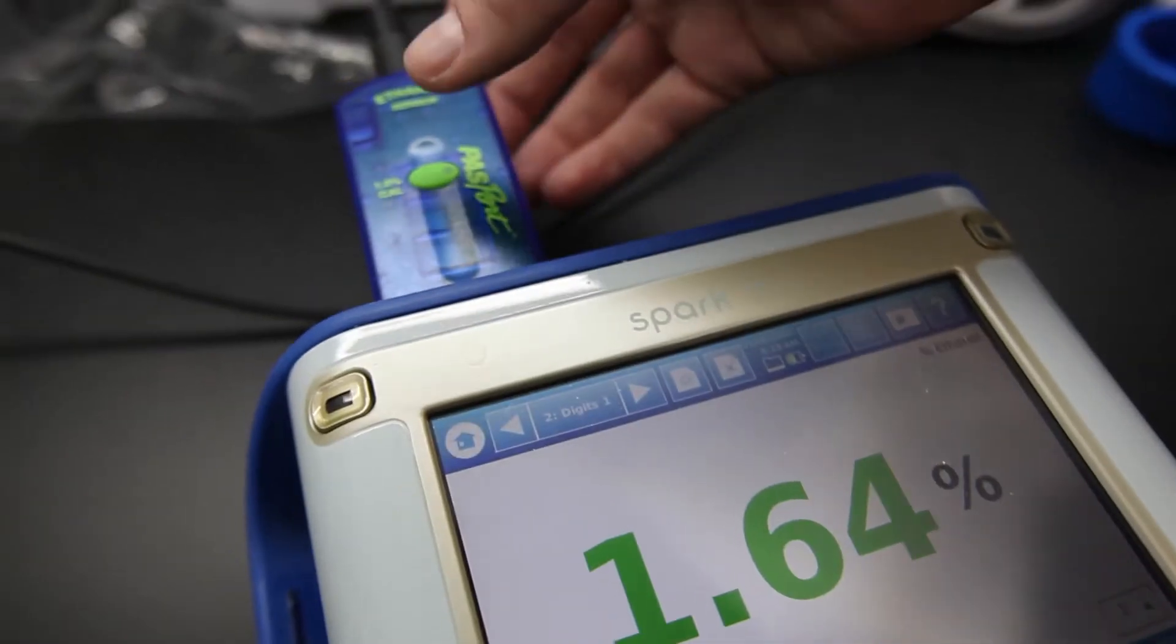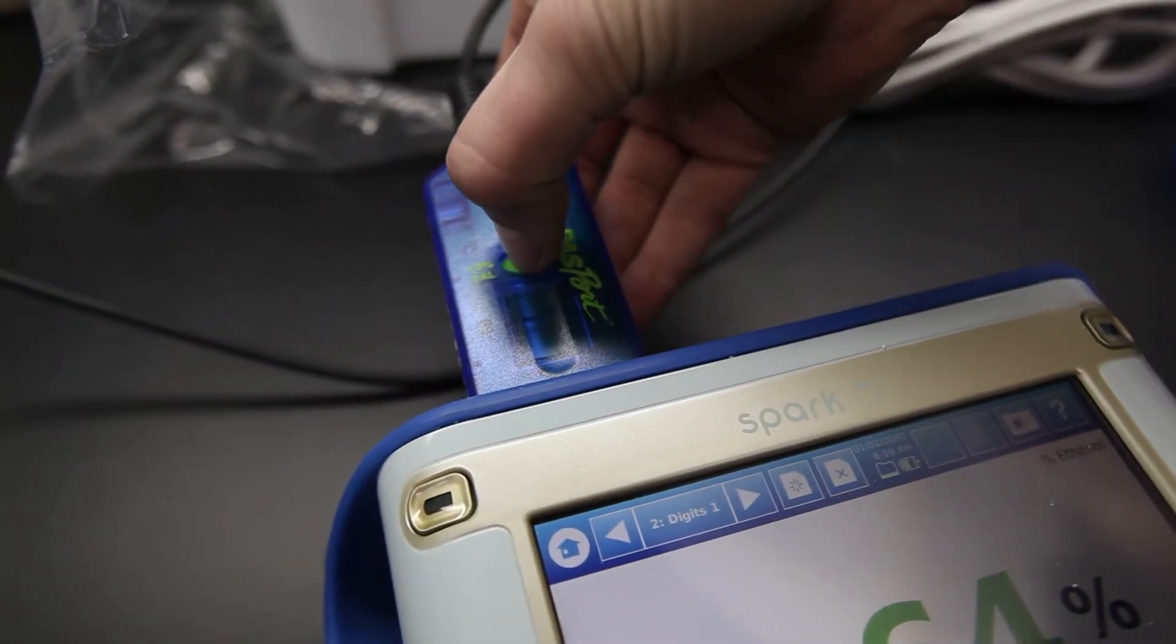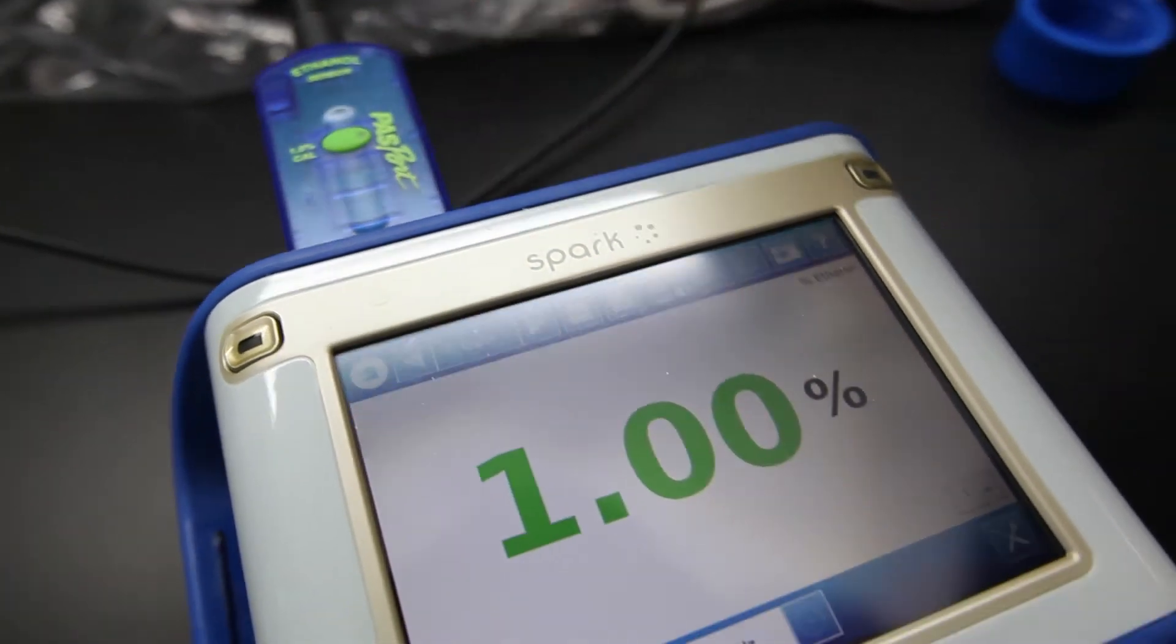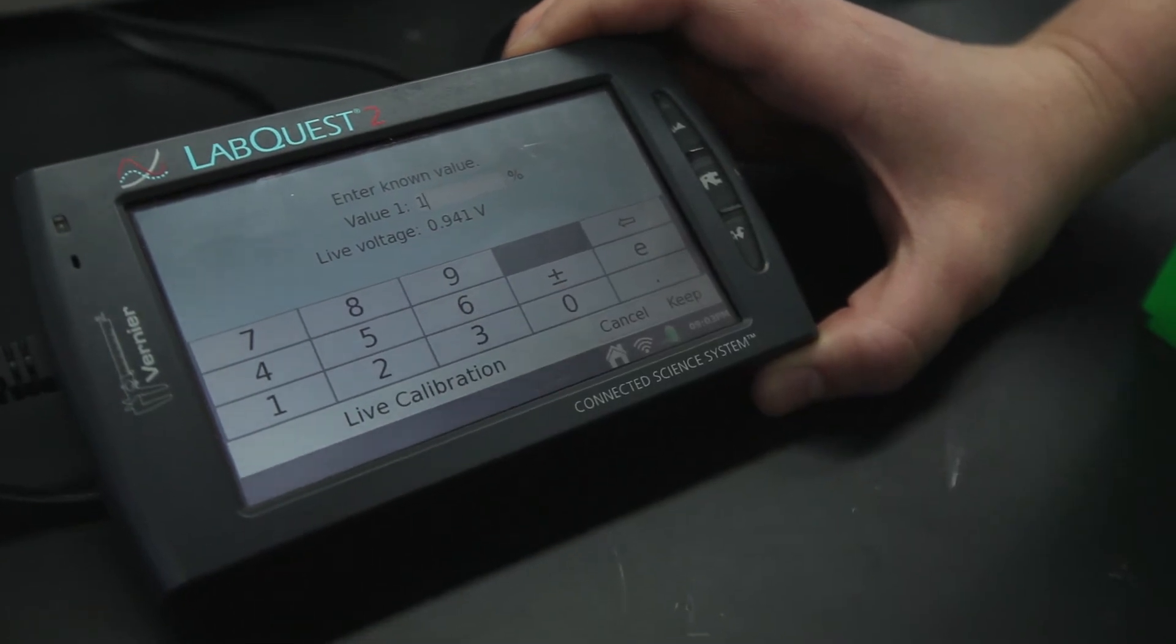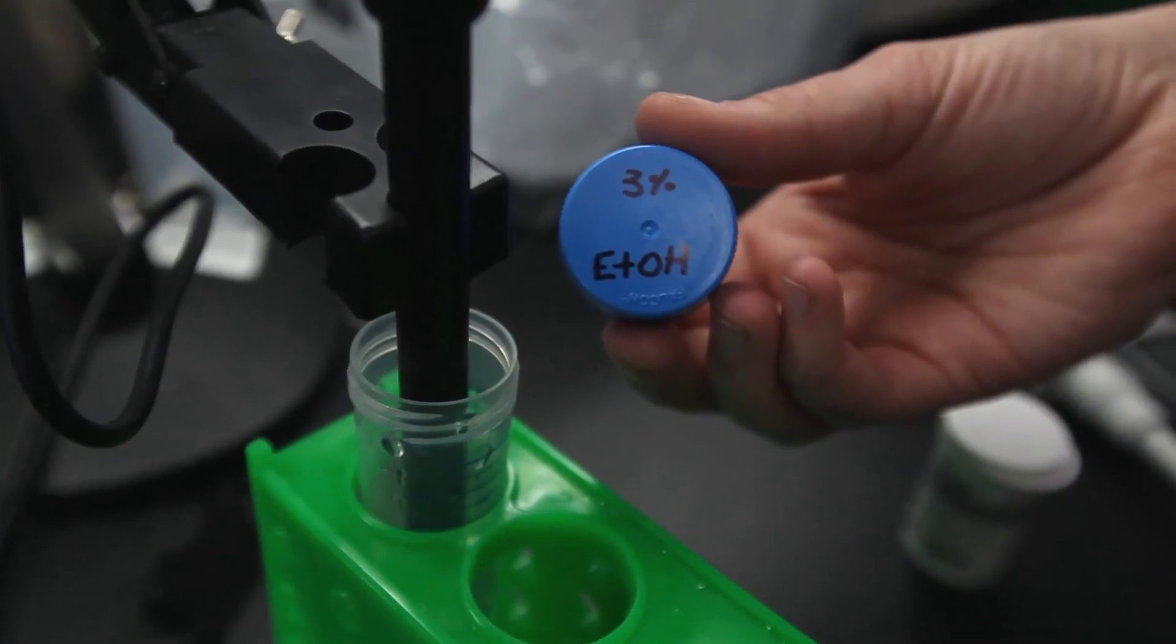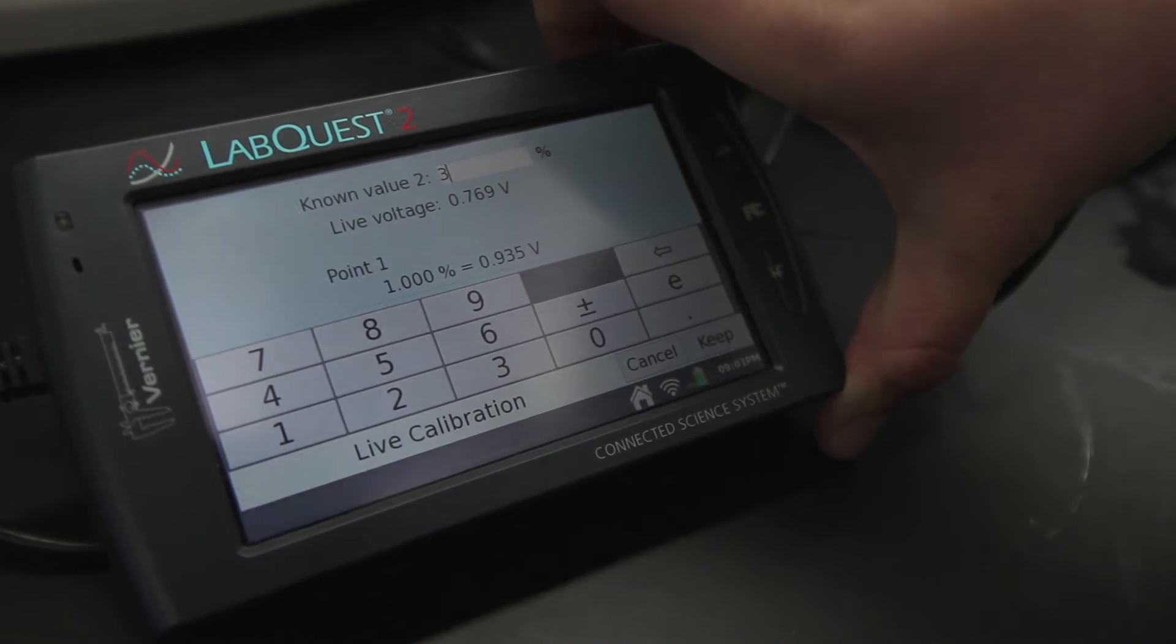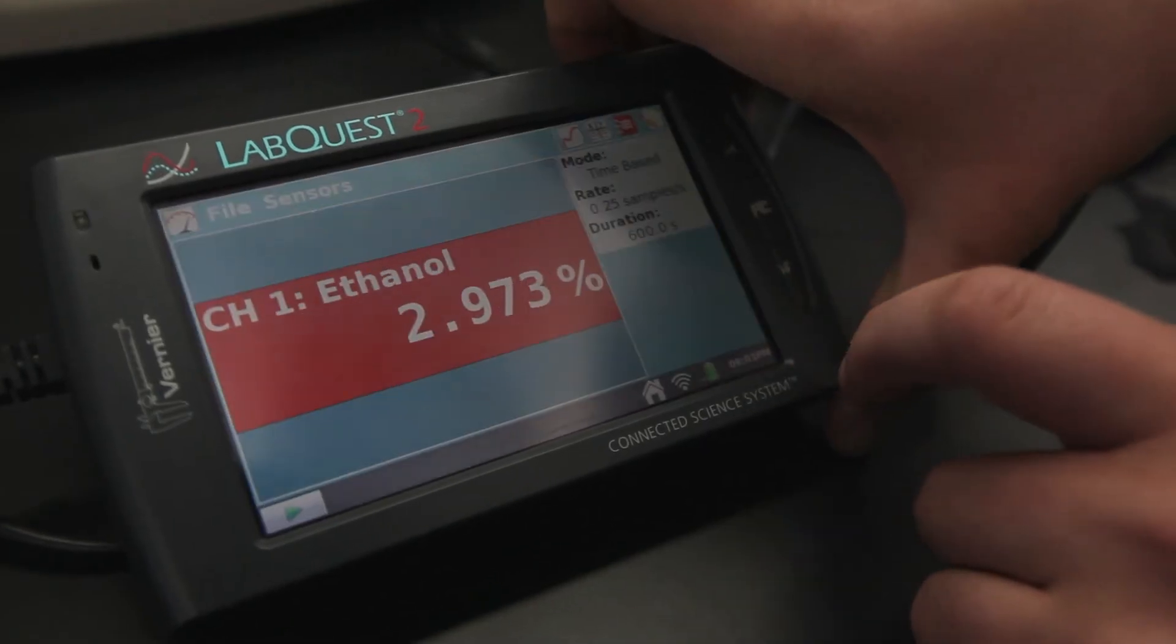For PASCO probes, use a one-point calibration with a prepared 1% ethanol solution. If you're using a Vernier probe, use a two-point calibration with either one-tenth and one-percent solutions, or one- and three-percent solutions. Match the calibration solution range with the expected range of your measurements.